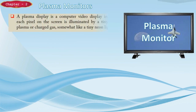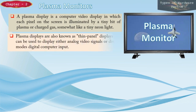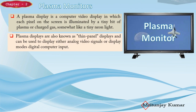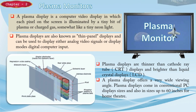A plasma display is a computer video display in which each pixel on the screen is illuminated by a tiny bit of plasma or charged gas, somewhat like a tiny neon light. Plasma displays are also known as thin panel displays and can display either analog video signals or digital computer input. They are thinner than CRT displays and brighter than LCD monitors, offering a very wide viewing angle. Plasma displays come in conventional PC display sizes and also up to 60 inches for home theaters.